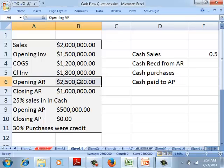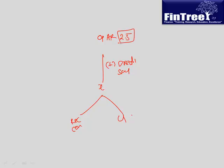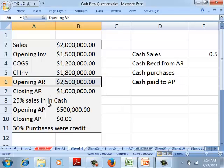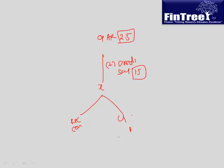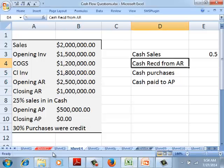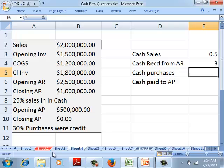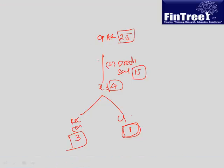Opening accounts receivable is 2.5 million, credit sales we calculated as 1.5 million, and closing accounts receivable is given as 1 million. So 2.5 plus 1.5 gives X of 4 million. If closing is 1 million, then cash received from accounts receivable must be 3 million.